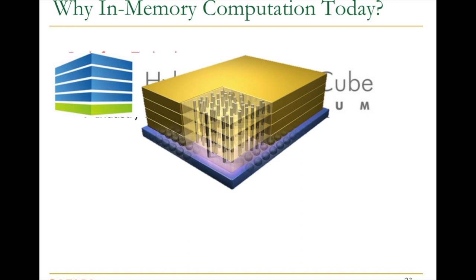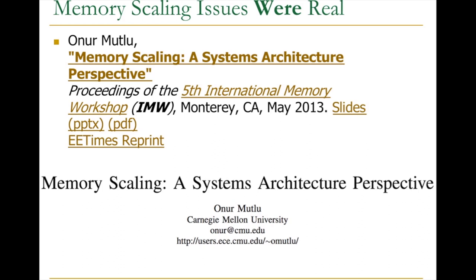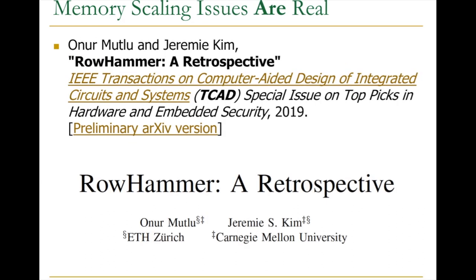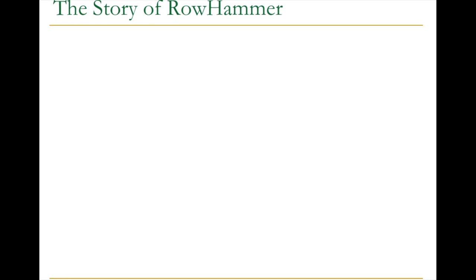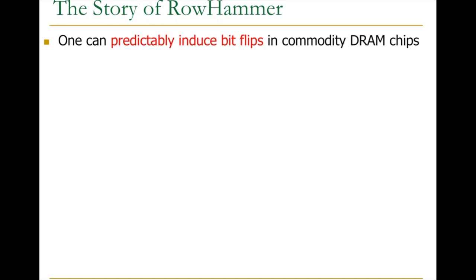UPMem is one startup putting processing units inside the DRAM chip. Micron has been experimenting with relatively simple operations inside the chip. This is happening because we're having problems with memory scaling. We wrote a paper in 2013 arguing that memory scaling issues are real and will get worse. A paper published in June 2019 shows real evidence that memory is becoming less and less reliable. Very briefly, I'll talk about the story of Rowhammer — one example of the scaling problem in memory chips today. Because cells are too close to each other, you can predictably induce bit flips in commodity DRAM chips. Whenever you access one row, you affect adjacent rows physically, because there's not enough electrical isolation between the rows.